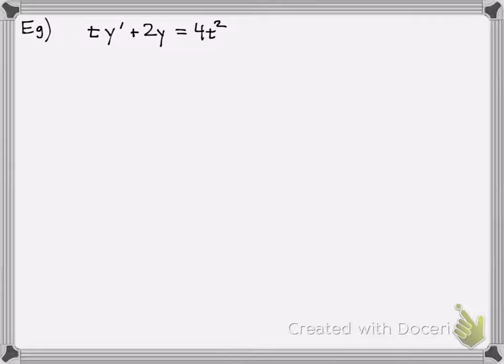This can be written as, remember, you can use only integrating factors when the coefficient in front of the y prime there is 1. So what we do is we just divide t across the entire equation there, and we get y prime plus 2 over t times y equals 4t.